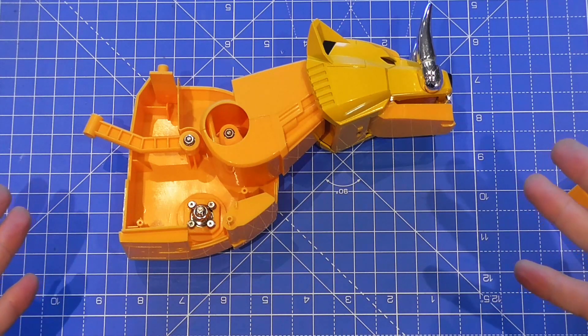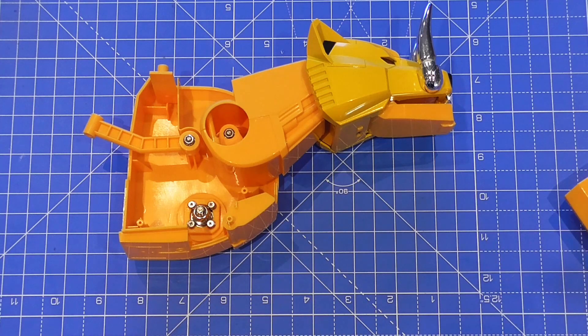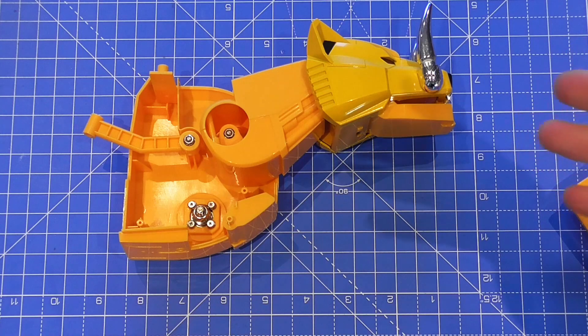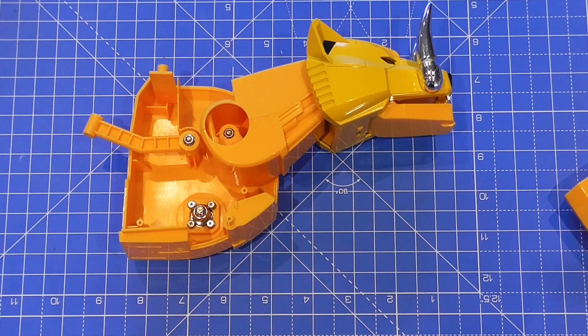And that is it for this Christmas episode of Build the Megazord. I hope you have enjoyed this short video. I hope you're having a fantastic Christmas, and I will see you next week on New Year's Day to finish off the parts of this saber-toothed tiger upper torso. So until then guys, take care, bye-bye.